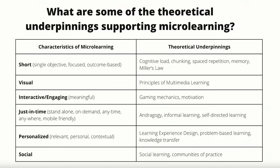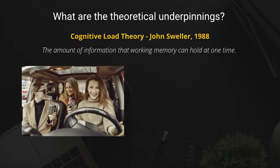Today, for the sake of time, we're only going to highlight two theories, but we invite you to delve deeper into the ones that interest you most. The one that to us is one of the most important is cognitive load theory, which John Sweller first published in 1988. Simply put, cognitive load is the amount of information that working memory can hold at one time.